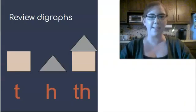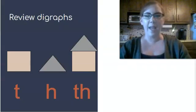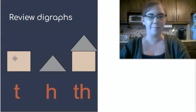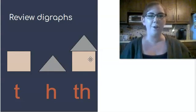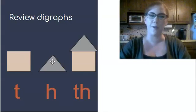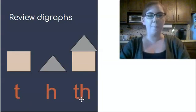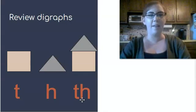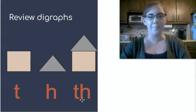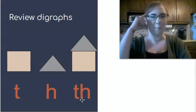We talked about this yesterday with our other digraphs. Here we have a square, here we have a triangle, but when you put them together you get a house. When they're apart they're just a square and a triangle. When you have T by itself it says T. When you have H by itself it says H. But when they're together they can say TH or TH. That sounds nothing like T and H. That's why we have to remember that it's different.